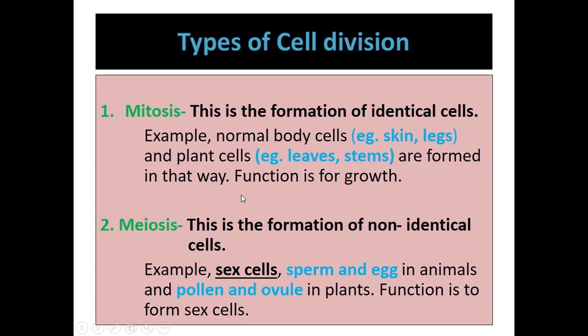Mitosis is done for growth and repair, and the cells formed are identical to the parent cell. Meiosis is done to form sex cells. The cells must be haploid so that during fertilization, when those sex cells come together, you get the original 46 chromosomes. Note that each living thing has a different number of chromosomes. In mitosis, one cell divides into two identical cells; in meiosis, one cell divides to form four new cells.